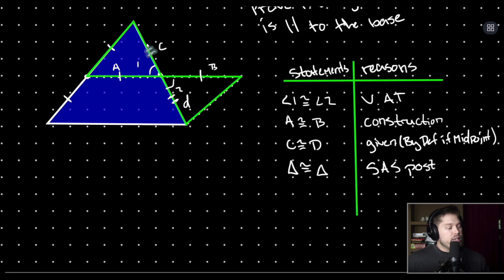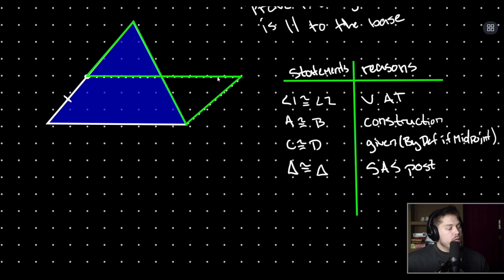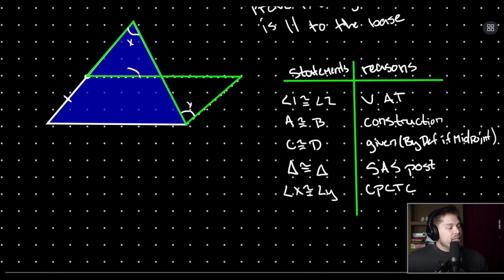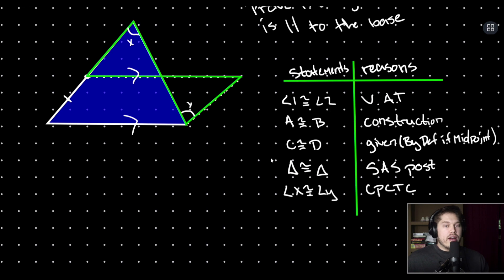Because our triangles are congruent, we know that their corresponding parts are congruent. So we can say that angle x is congruent to angle y because corresponding parts of congruent triangles are congruent.